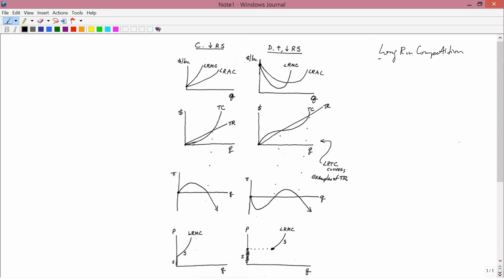We're now again going to deal with long-run competition, but this time cases C and D. You'll recall that case C was decreasing returns to scale, and case D was first increasing and then decreasing returns to scale.